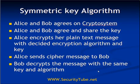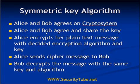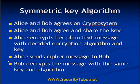To define the symmetric key algorithm formally: Alice and Bob have to agree on a crypto system. Alice and Bob have to agree on the same shared key, and that shared key should be known only to Alice and Bob and no one else. Alice then encrypts her plain text message with the decided encryption algorithm and the shared key. She sends that ciphertext message to Bob, and Bob decrypts the message with the same key and algorithm to recover the plain text.